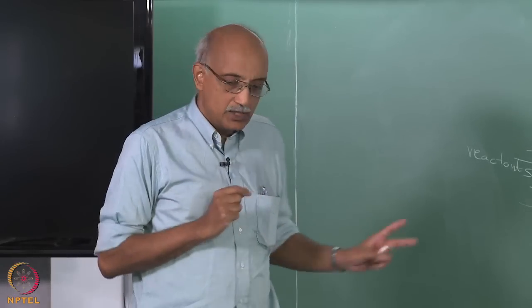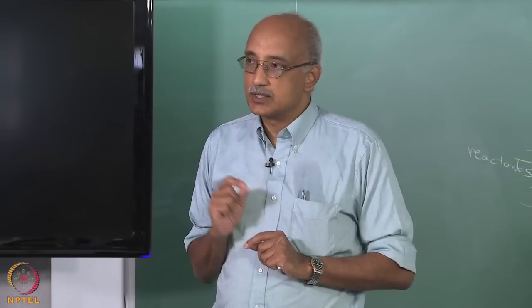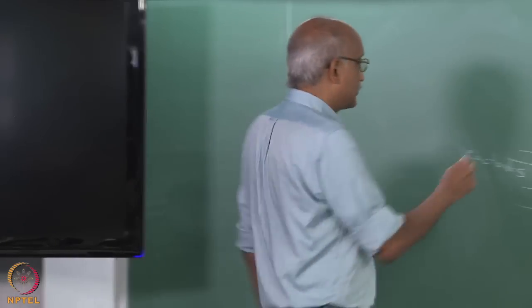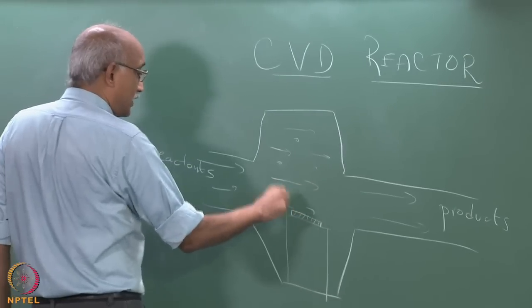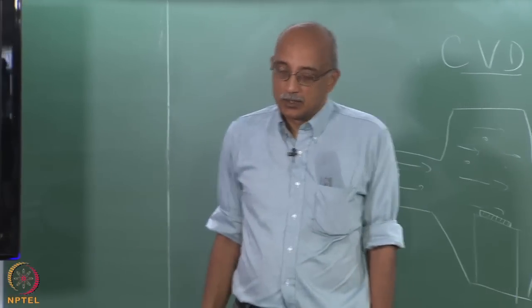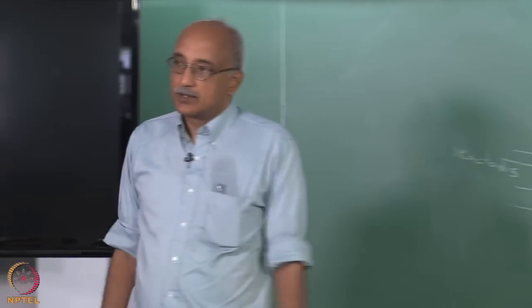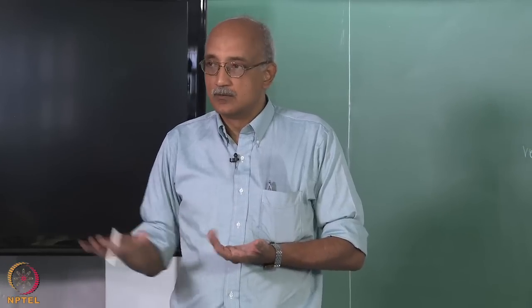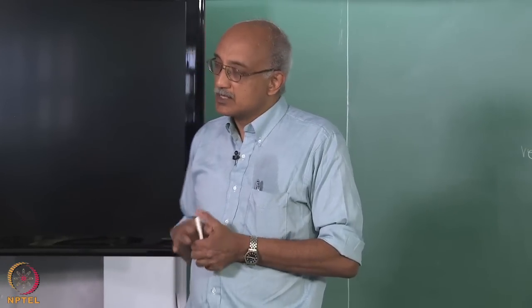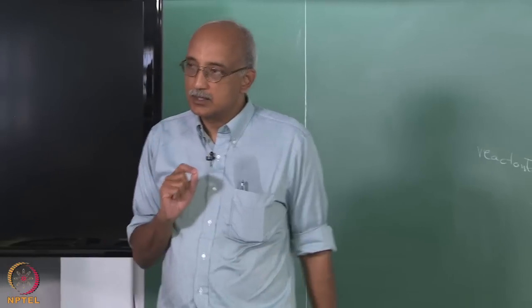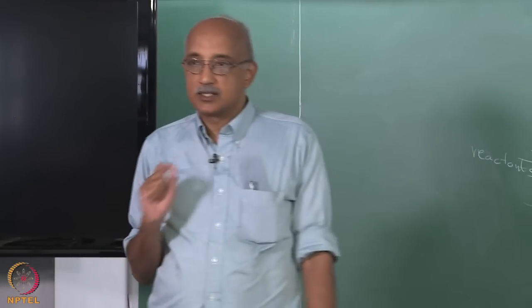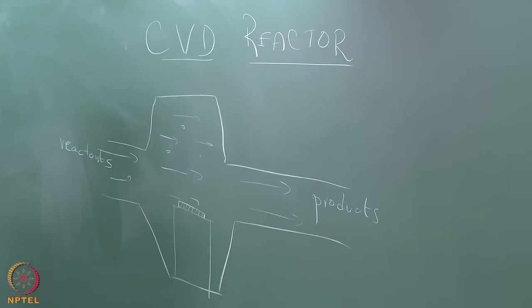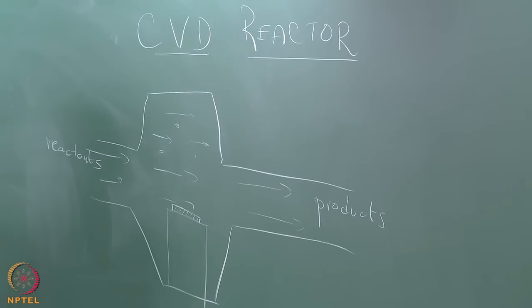In a CVD reactor you do not want homogeneous nucleation to happen. You do not want little silicon particles forming in the gas phase and then trying to deposit on the substrate — that would result in a very flaky, powdery deposit rather than a continuous film. The entire point of a CVD reactor is to design it such that the formation of the condensed phase only occurs at the substrate on which deposition is supposed to happen, and you completely suppress its formation anywhere else in the reactor.